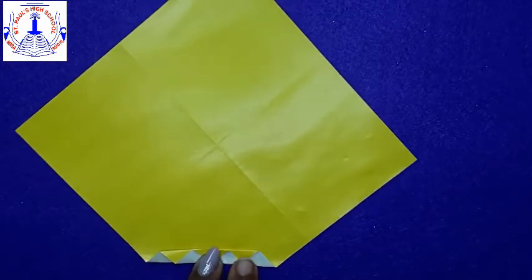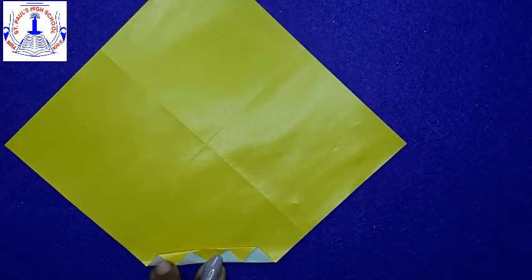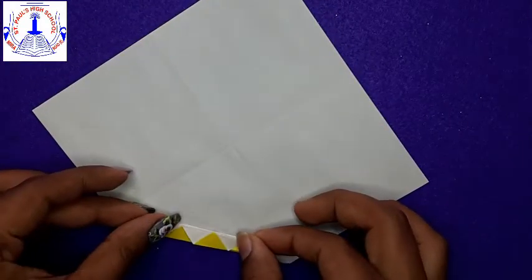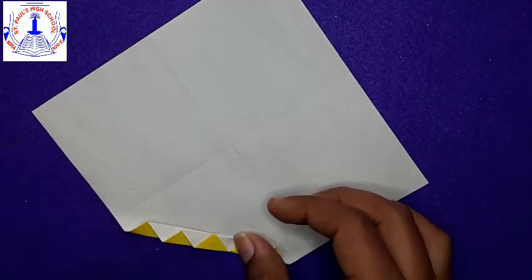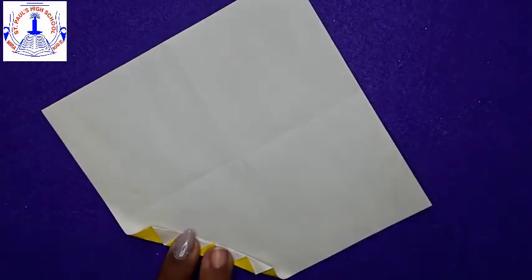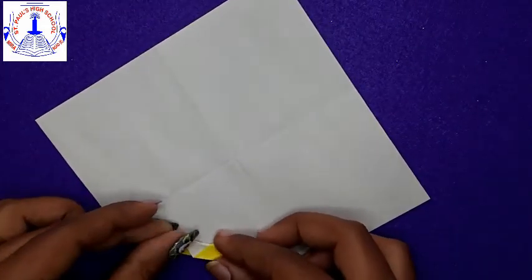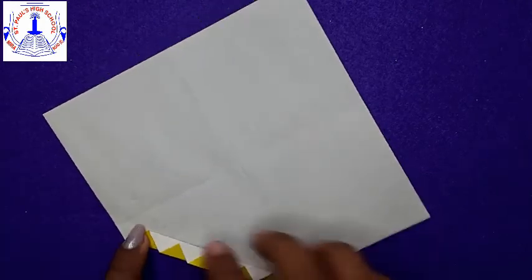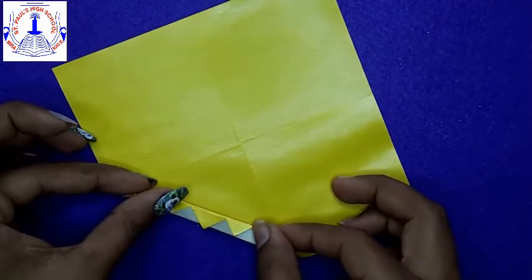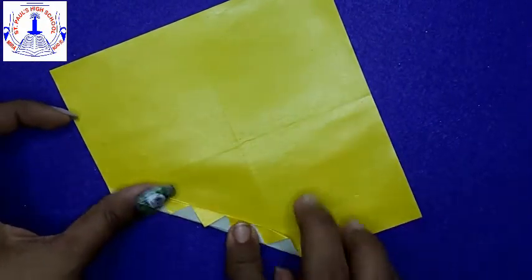So now observe how I'm folding. See, you get a triangle here. One. Okay. Two. This way. So again, flip your paper. Again, give it a fold. So likewise, back and forth. Go on folding. So I will tell you all how much to fold. Pay attention.